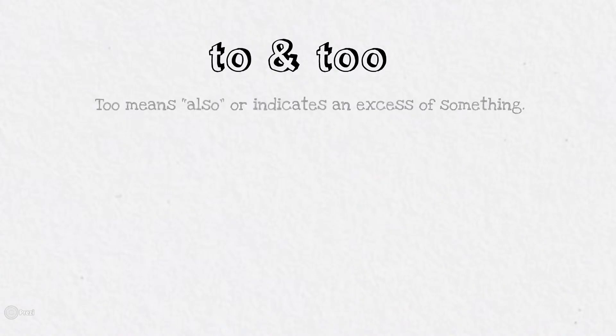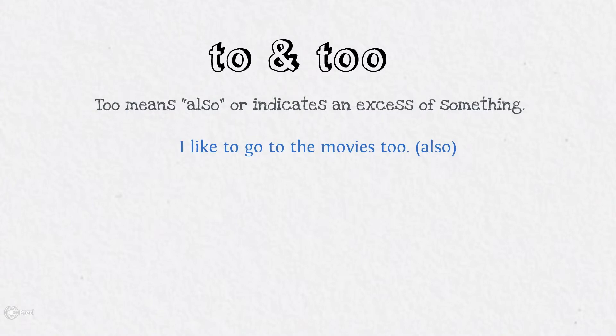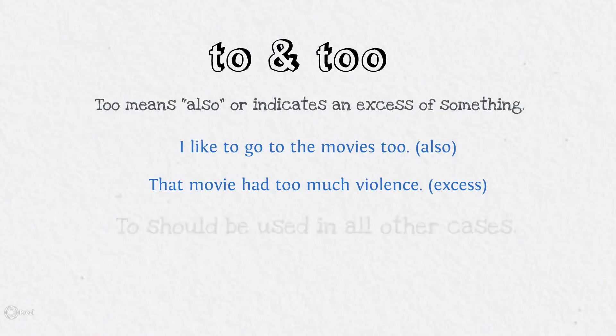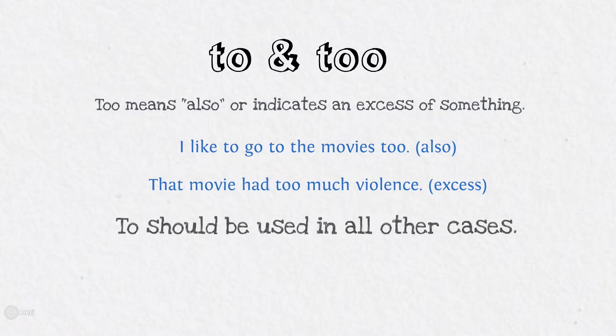To, too, and two. Too means 'also' or indicates an excess of something: 'I like to go to the movies too,' or 'That movie had too much violence.' To should be used in all other cases.